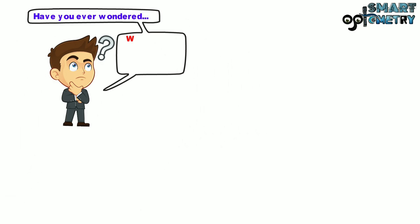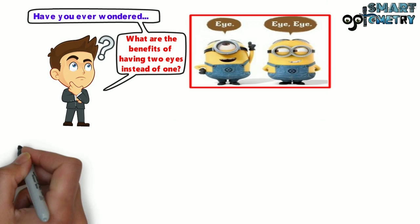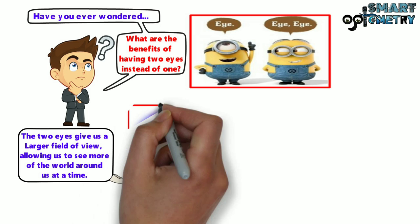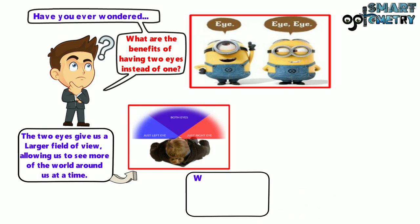Have you ever wondered what are the benefits of having two eyes instead of one? One, the two eyes give us a larger field of view, allowing us to see more of the world around us at a time. We can navigate through our world more quickly when using two eyes.